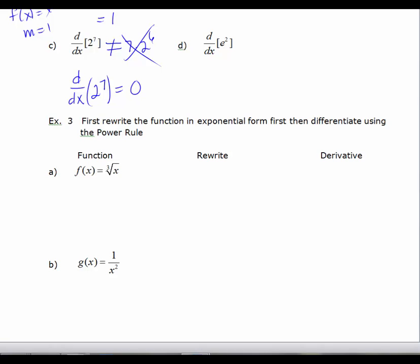Now, d/dx of e squared, the derivative of e squared. e is not a variable. e is around 2.7 and when you square it, you get a constant. And so the derivative of e squared is also 0.